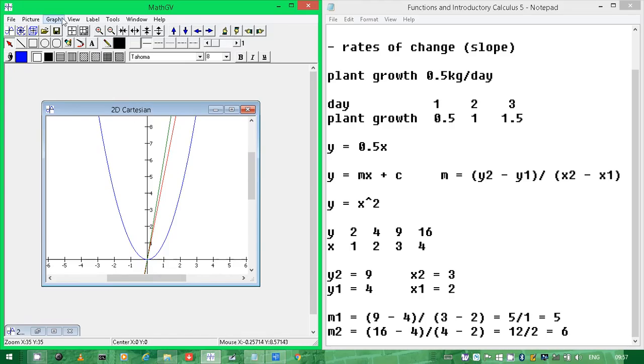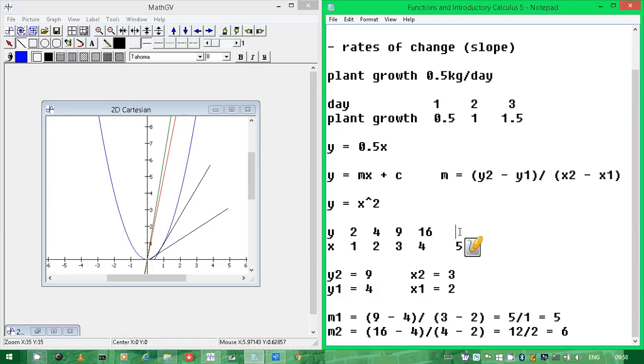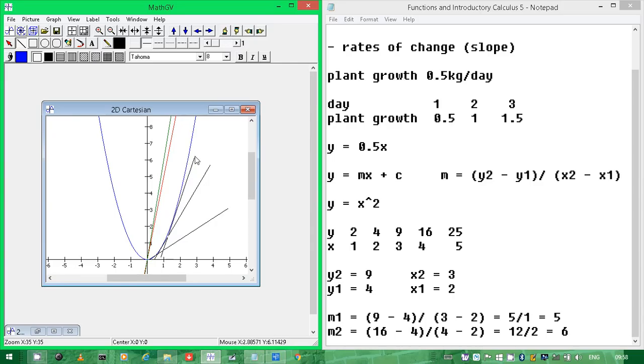But the idea is that if you draw a line it should line up with whatever it is. But we can see that it keeps increasing the amount that it changes, doesn't it? Here we've got 2, then we've got 5, then we've got the difference between 9 and 16, which is 7. So 2, 5, 7, then there's 25, which is 9. So this M is increasing as well, isn't it? So the rate of change increases.